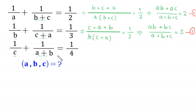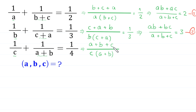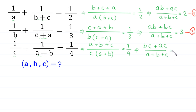From the third equation, we take the LCM of c and (a+b). The LCM is c(a+b). This LCM divided by c gives (a+b), and divided by (a+b) gives c. So (a+b)·1 + c·1 = 1/4. Taking the reciprocal on both sides: (bc + ac) / (a+b+c) = 4. Let us call this Equation 3.